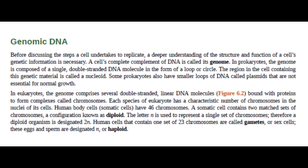Genomic DNA: Before discussing the steps a cell undertakes to replicate, a deeper understanding of the structure and function of a cell's genetic information is necessary. A cell's complete complement of DNA is called its genome. In prokaryotes, the genome is composed of a single, double-stranded DNA molecule in the form of a loop or circle. The region in the cell containing this genetic material is called a nucleoid. Some prokaryotes also have smaller loops of DNA called plasmids that are not essential for normal growth.